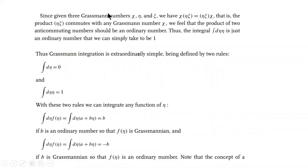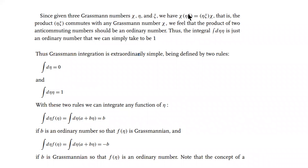For the second rule, we consider three Grassmann numbers: chi, eta, and xi. We observe that when eta and chi are taken together as a product, this product commutes with any other Grassmann number. So we can say that the product of two Grassmann numbers is an ordinary number, because it commutes — just as ordinary numbers commute.